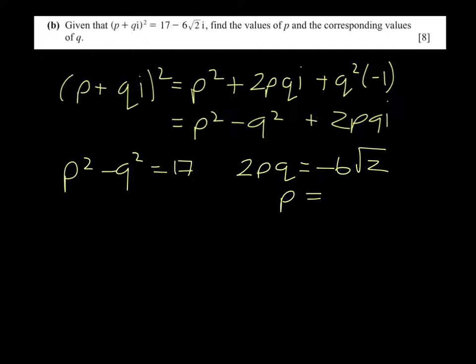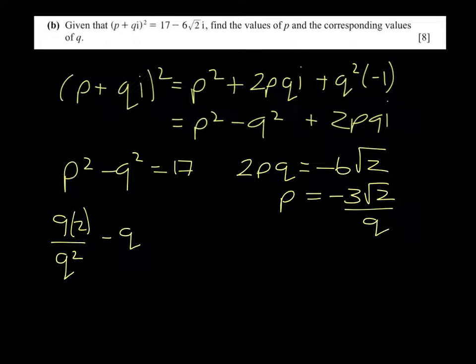So p will be minus 3 root 2 divided by q. If we replace that, p squared will be 9 times 2 all over q squared minus q squared equals 17. Multiplying by q squared, 18 minus q to the 4 equals 17 q squared.